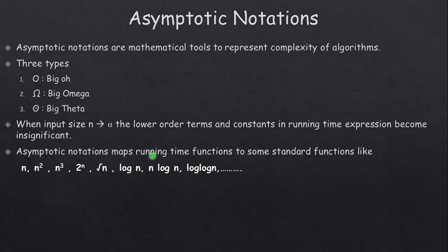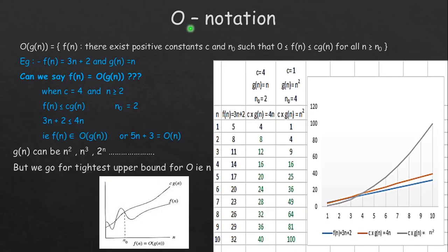The first notation is Big O. The formal definition is: O(g(n)) = f(n) if there exist positive constants c and n₀ such that 0 ≤ f(n) ≤ c·g(n) for all n ≥ n₀. Here n is the size of the input and f(n) is the running time function. We can say f(n) = O(g(n)) if there exist positive constants c and n₀ such that f(n) ≤ c·g(n).